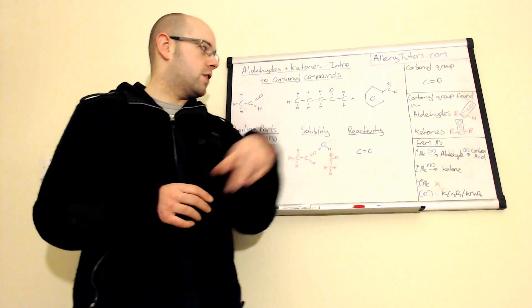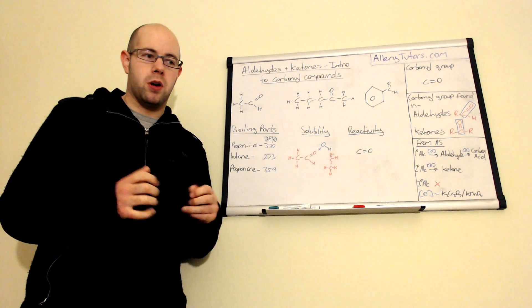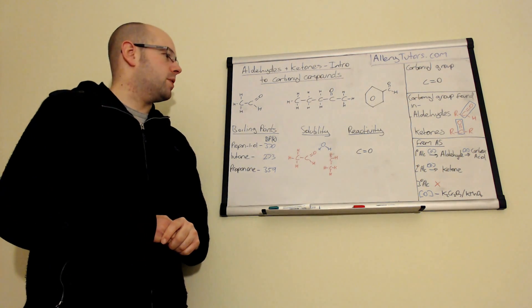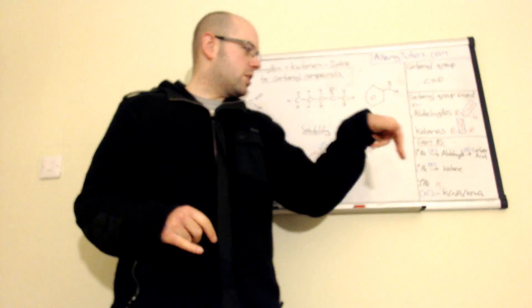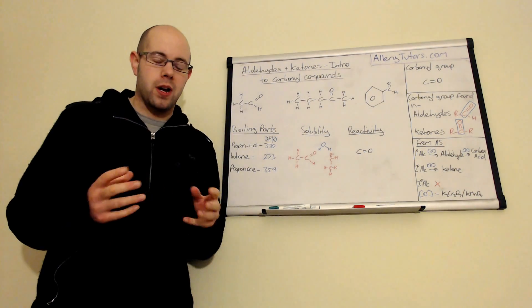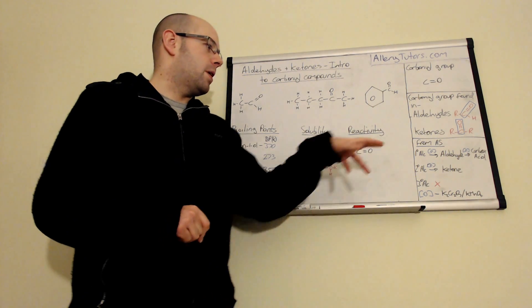We're just going to look at the first two for A2 chemistry, which is aldehydes and ketones, and we're going to look at what we can do with them and their reactions as well. We're going to start with just looking at a bit of information from AS chemistry when you would have looked at how you made aldehydes and ketones.